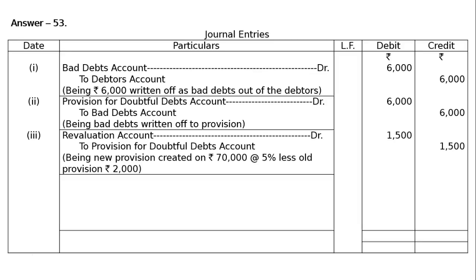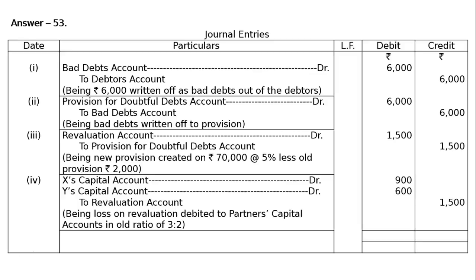This Rs.1,500 is a loss because it was debited to the Revaluation account — new provision means new expense being set up. The last entry is: X's capital account debited Rs.900, Y's capital account debited Rs.600, to Revaluation account Rs.1,500 — being loss on revaluation debited to partners' capital accounts in the old ratio of 3 to 2. The totalling will be Rs.15,000 for both the debit column and the credit column. This is the final answer.